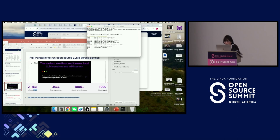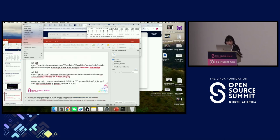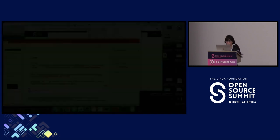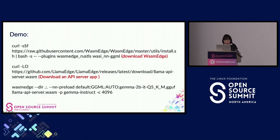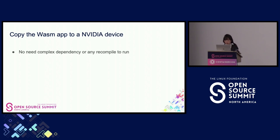While the demo installs the WasmEdge GGML plugin, I'll note: once the first step succeeds you can SCP the WasmEdge file — the API server Wasm file — to another device and it can run without any recompilation.